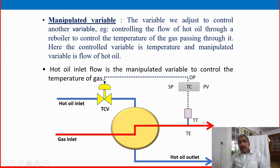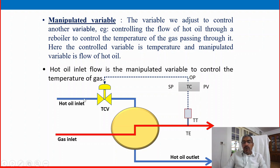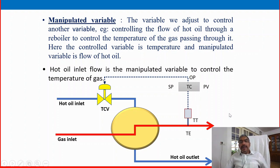The temperature sensor is connected on the hot oil side. The controlled variable is temperature, and the manipulated variable is the flow of oil being maintained. If the temperature is lower than the set point, we will reduce the cold oil flow into the heat exchanger. If the temperature is higher than the set point, we will increase more oil flow to bring down the oil temperature to equal the SP. That is the controlled variable and the manipulated variable.